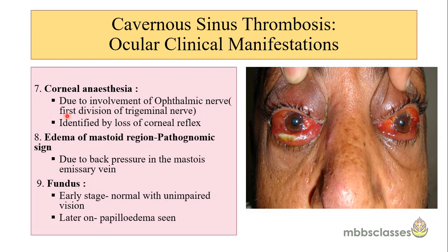Involvement of the first division of the trigeminal nerve — the ophthalmic nerve — causes corneal anesthesia, tested by loss of corneal reflex. We must examine the mastoid region in any suspected case, as edema of the mastoid region is a pathognomonic sign of cavernous sinus thrombosis, resulting from back pressure in the mastoid emissary veins. Fundus examination in the early stage is usually clear, but papilledema may be present later. The clinical signs and symptoms must be differentiated from orbital cellulitis and panophthalmitis.